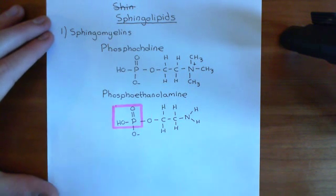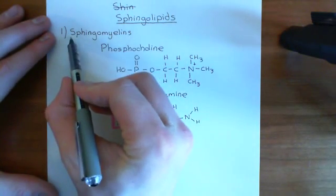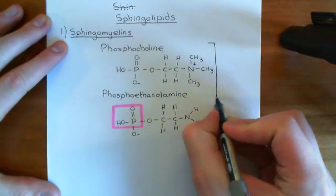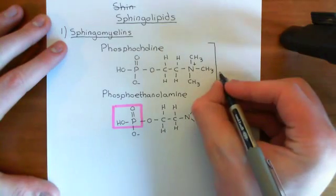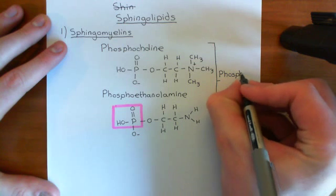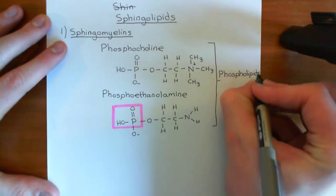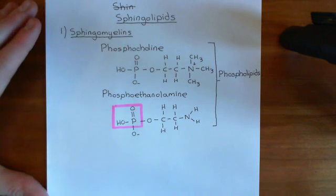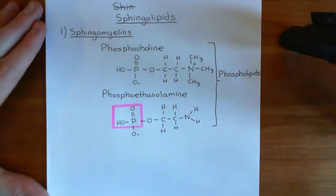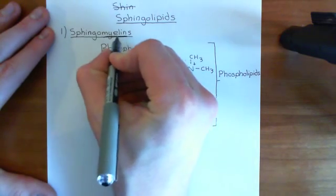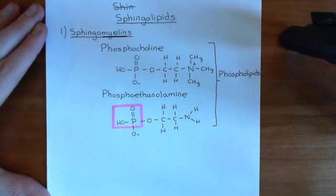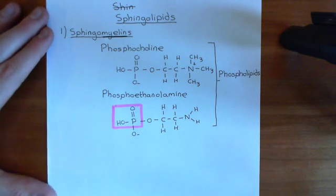All of these sphingomyelins are considered sphingolipids within the class of sphingomyelins. Because they have the phosphate group within their structure, when we attach these groups onto ceramides, these sphingomyelins will be considered phospholipids. As their name suggests, they are hugely present within myelin that surrounds neurons, but they are also present within the normal phospholipid bilayer that surrounds all cells.